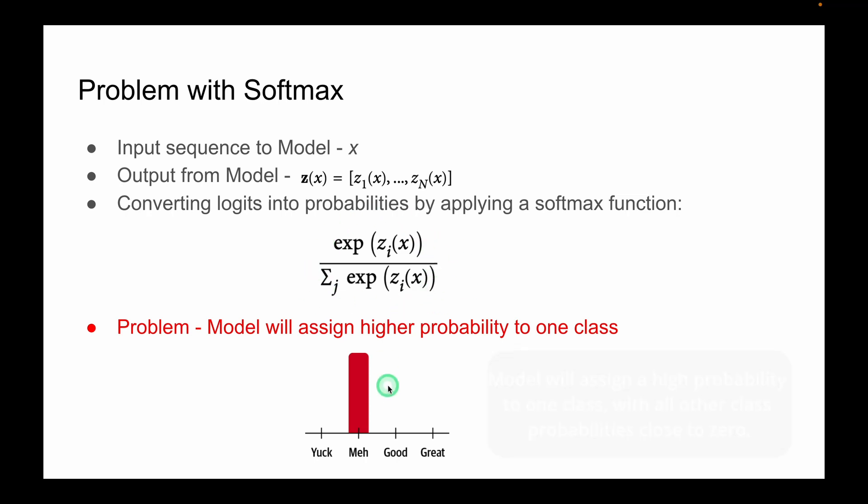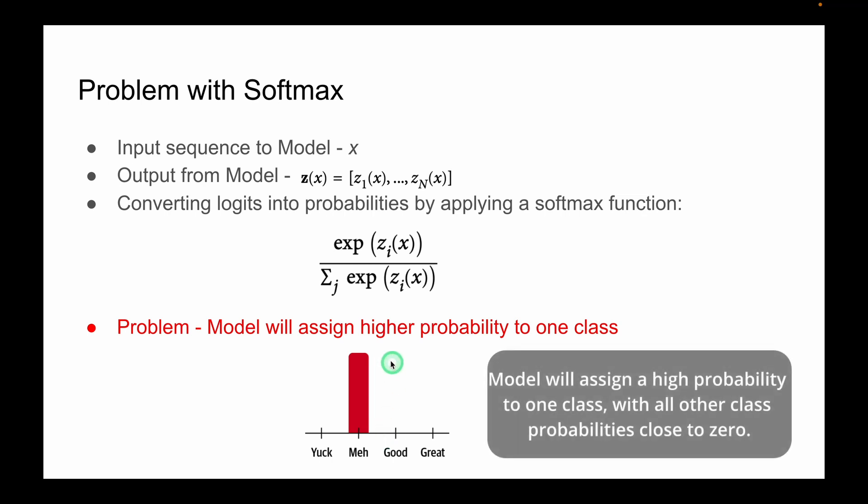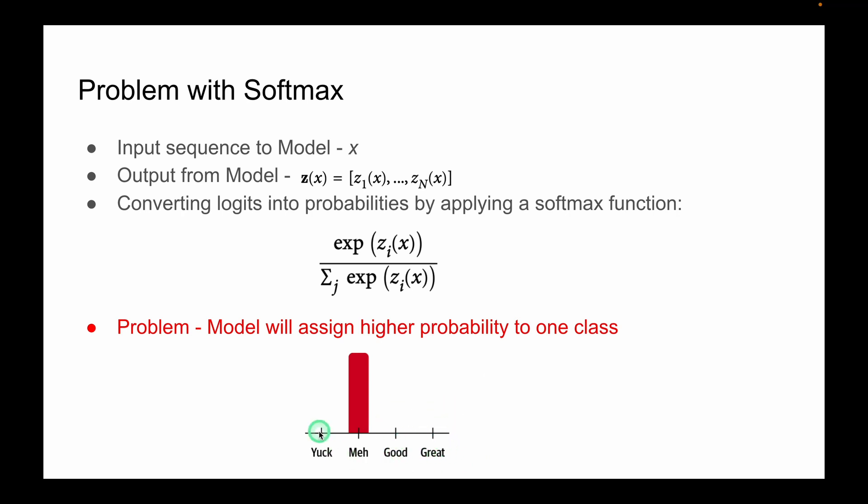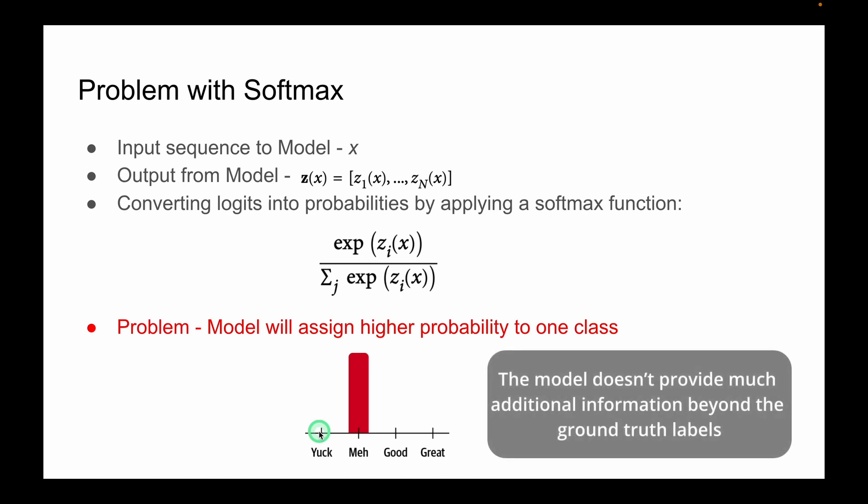But in many cases the model will assign a very high probability to only one class, like in this example with all the other probabilities or all the other class probabilities close to zero. When this happens, the model doesn't provide additional information beyond the ground truth labels.